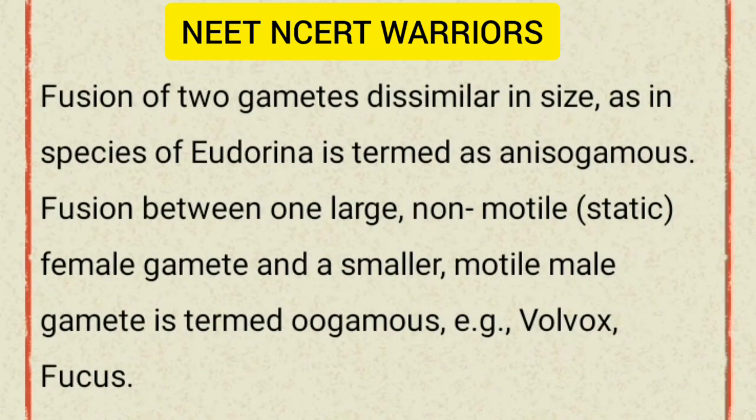Fusion of two gametes dissimilar in size, as in species of Eudorina, is termed anisogamous. Fusion between one large, non-motile female gamete and a smaller, motile male gamete is termed oogamous — for example, Volvox and Fucus.